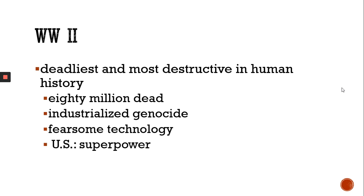The U.S. emerges out of the war as something we hadn't used this term before — a superpower. The Soviet Union will eventually compete with the United States for that title, but emerging right after the Second World War, the U.S. really fares the best of any country. Countries in Europe are devastated by the war. The U.S., although they participated and lost lots of personnel, never really suffered home invasions except the attack on Pearl Harbor. World War II really allows the United States to emerge as the most powerful country in the world.